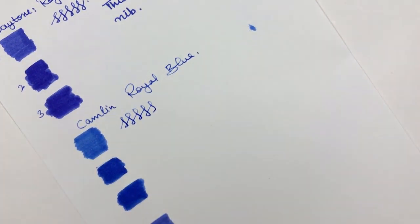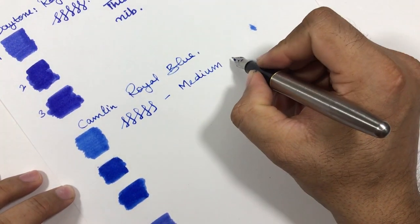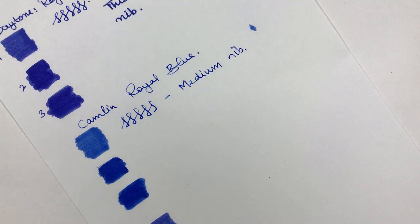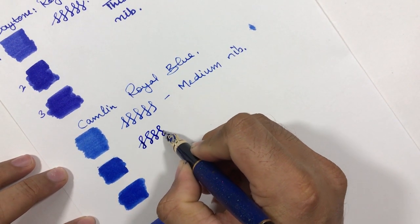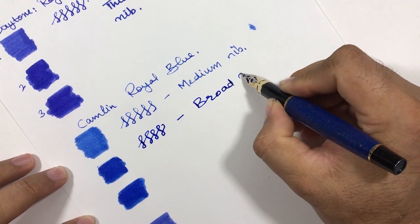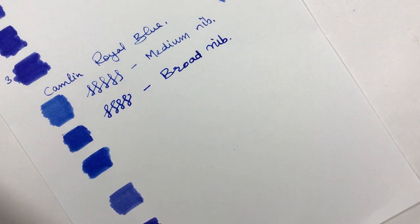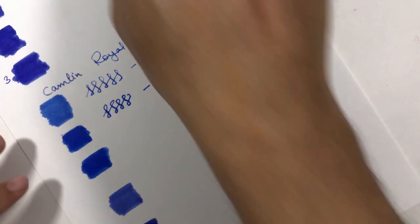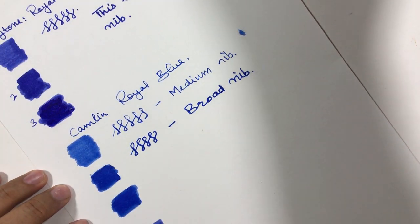This is medium nib and this is broad nib. I have always had issues with saturation in Indian inks. This Camlin ink is a little less saturated than the Daytone ink as of now. Let's have another pass here, third pass. Let's see how dark or light it looks. This is Daytone.